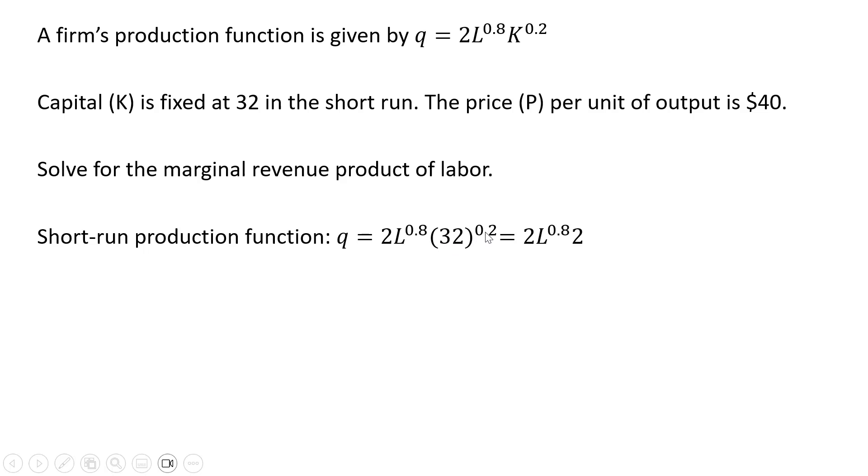32 raised to the 0.2 power is 2. We're going to multiply these 2s together to get 4. So here is our short-run production function.